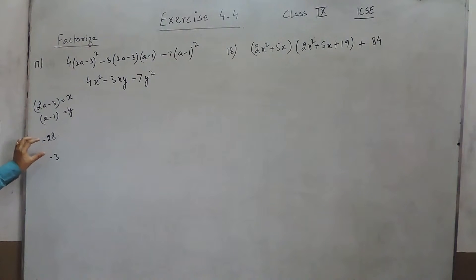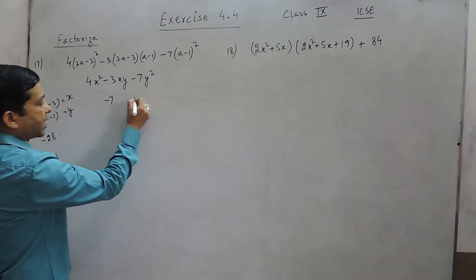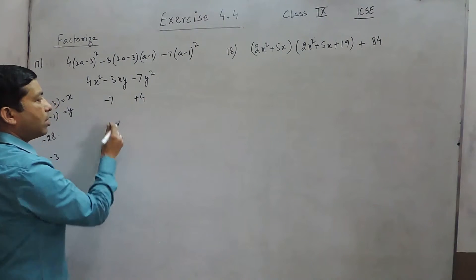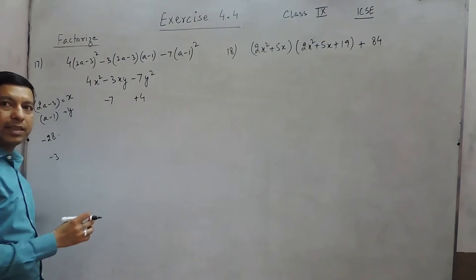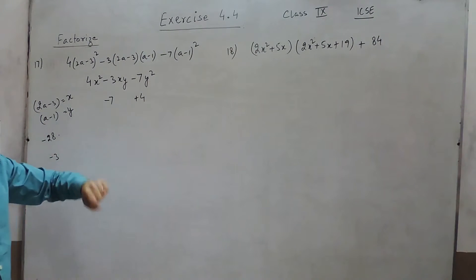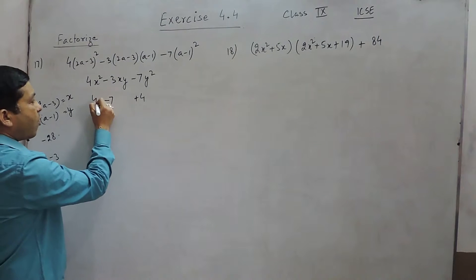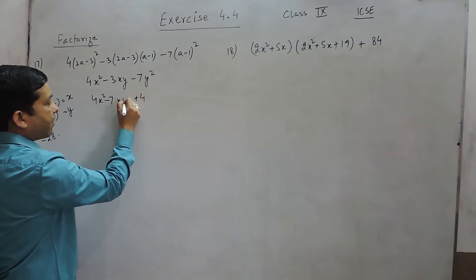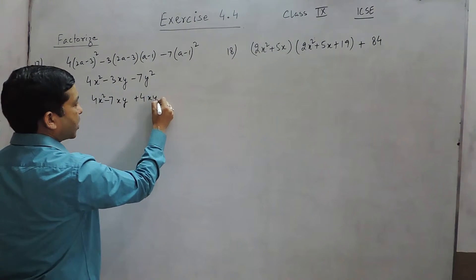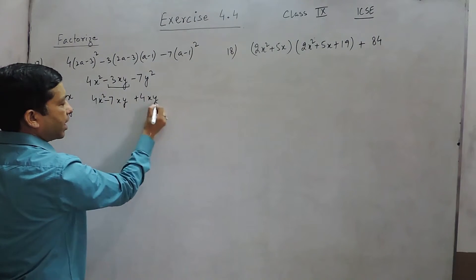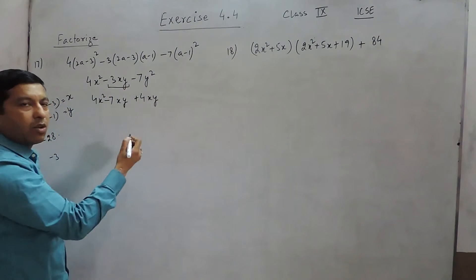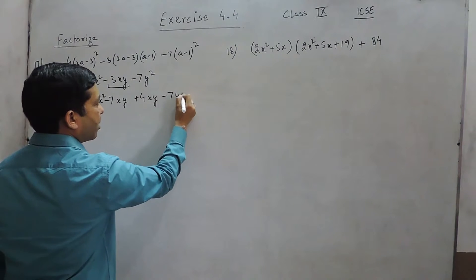Now if we want to divide -28 into two factors where sum is -3, it can be -7 and +4. -7 plus 4 is -3 and -7 multiply by +4 is -28. So 4x² - 7xy + 4xy - 7y². This 3xy we have converted to -7xy and 4xy minus 7y².